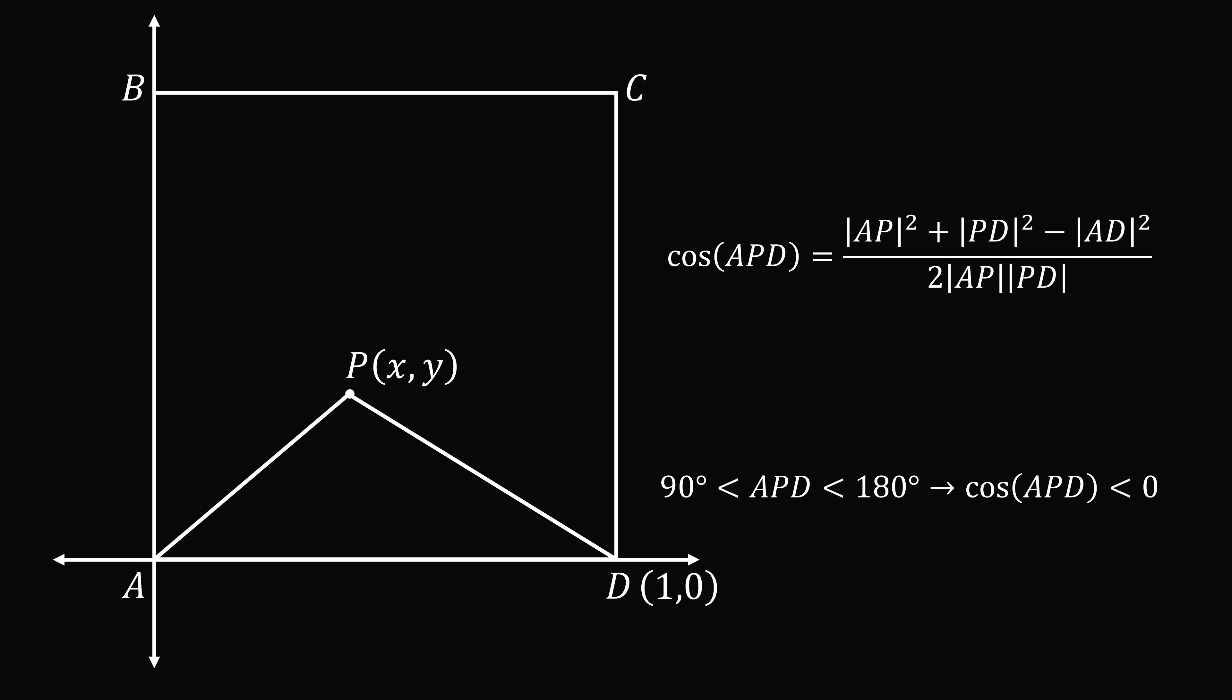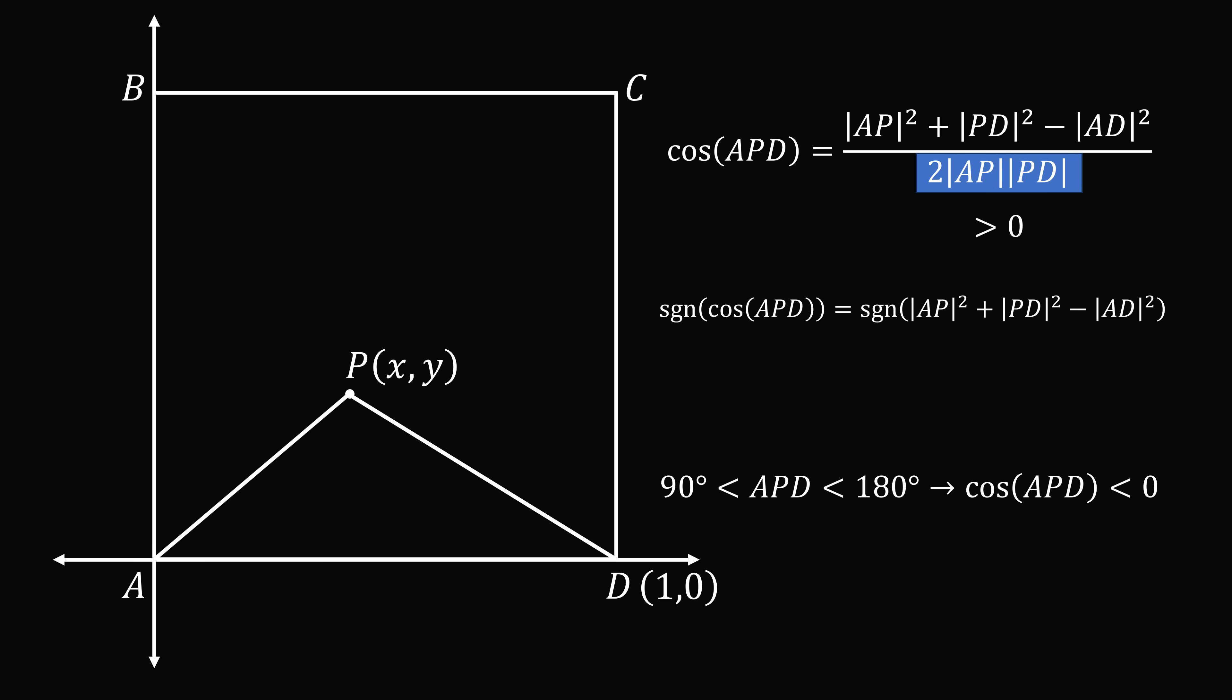So let's look at this formula. And we want to figure out the sign, whether the cosine of the angle is positive, negative, or equal to 0. Now, in the denominator, we have 2 times the length of AP times the length of PD. So this will be some positive number, greater than 0. So this won't affect the sign of the cosine of the angle. We know this is greater than 0, so we can just focus on the numerator.